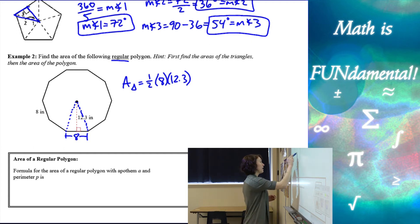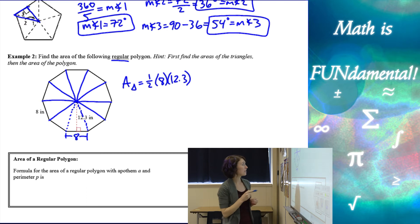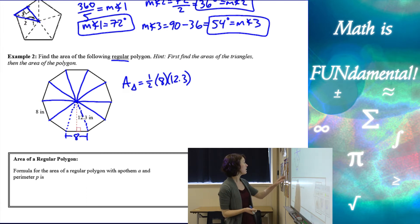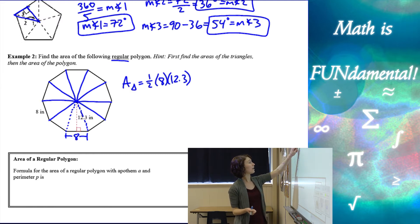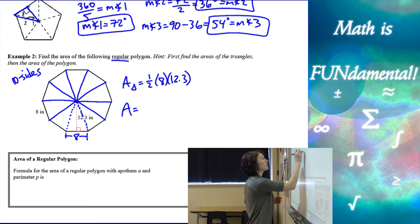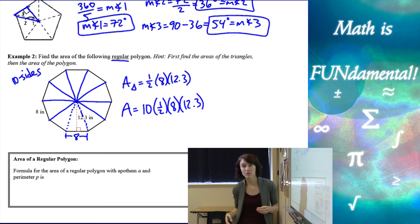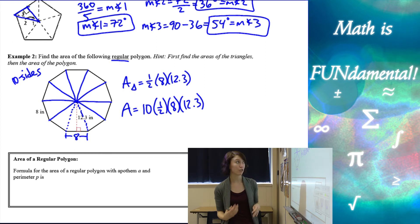If I draw all of the possible triangles from the center to each vertex, I have exactly as many triangles as I have sides. So this is a 10-sided figure. If I have 10 sides, then I'm going to have 10 of these triangles. So my area is going to be 10 times one half times 8 times 12.3 — that's 10 triangles times one half base times height of each triangle.